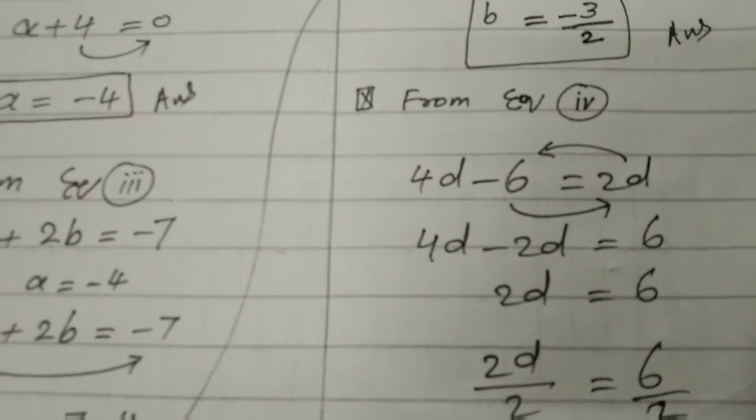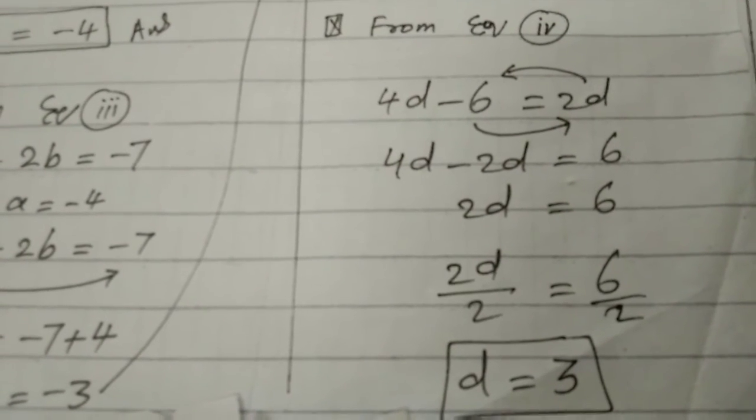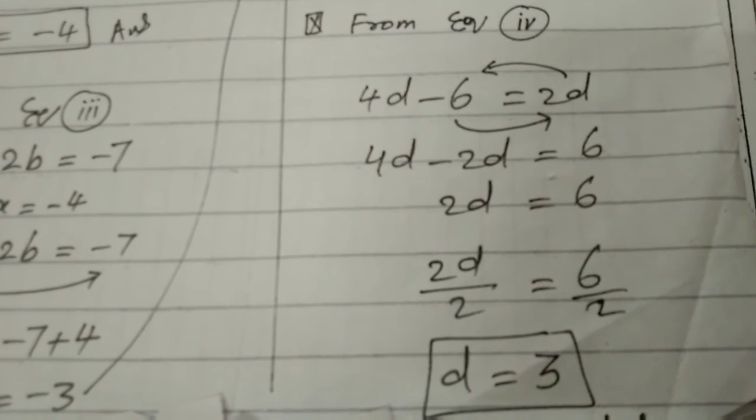From equation number 4, 4d minus 6 is equal to 2d. So 4d minus 2d is equal to 6, and 2d is equal to 6.